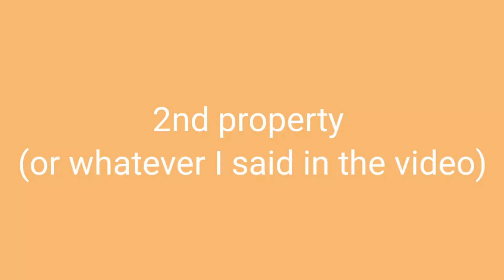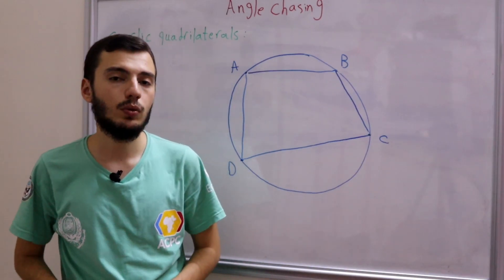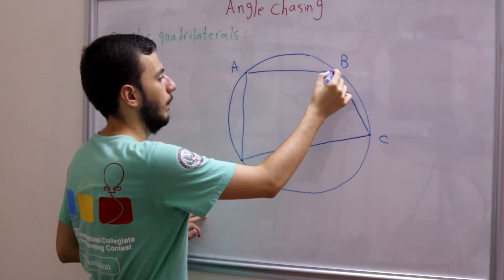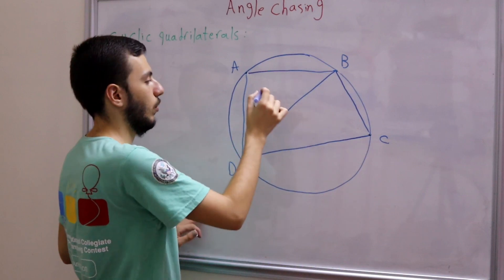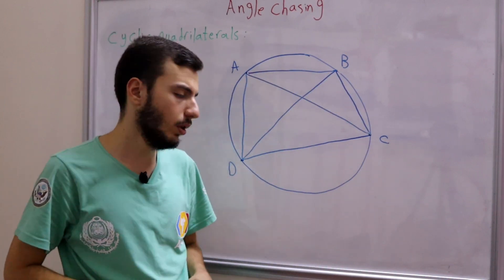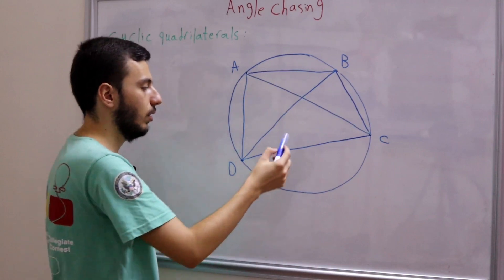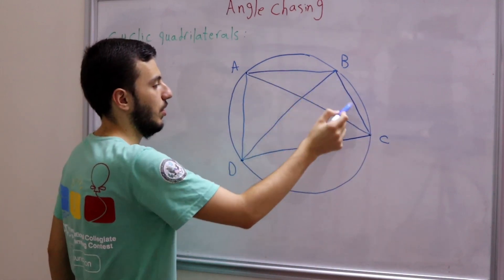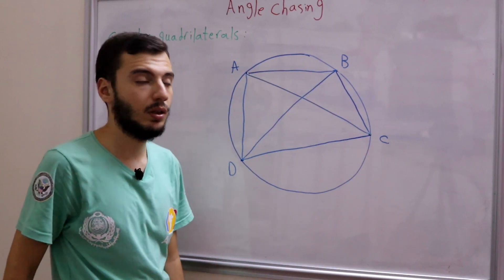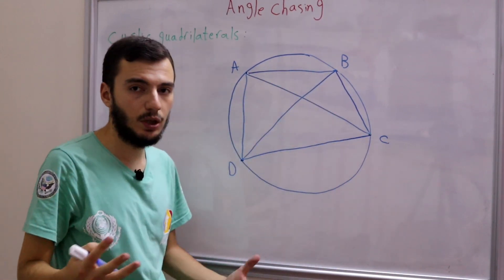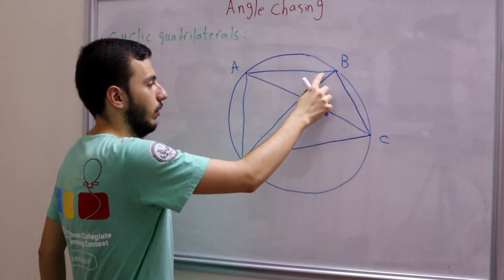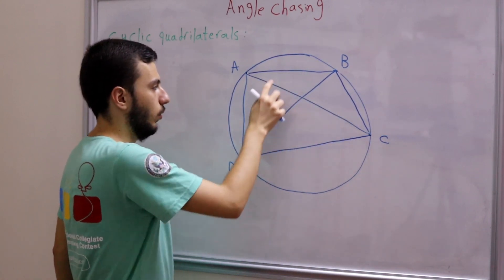Now let's move on to property number two. For this we need to draw both diagonals BD and AC. The second property states that angle DBC equals angle DAC — this angle and that angle are the same. Similarly, corresponding pairs of angles that subtend the same arc are equal. The rule is: two inscribed angles that subtend the same arc are equal. For example, angle CBD and angle CAD both subtend arc CD, so they are equal.